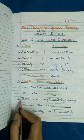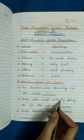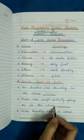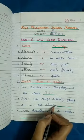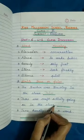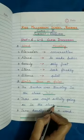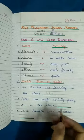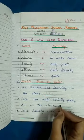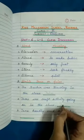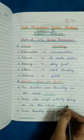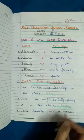Second: there was craft activity going on in the class — class me craft activity chal rahi thi. This statement is wrong because class discussion activity chal rahi thi. So we write False: A, L, S, E — False.